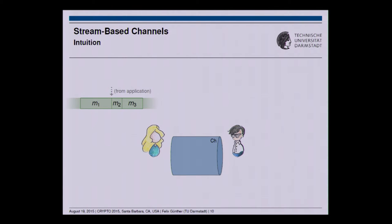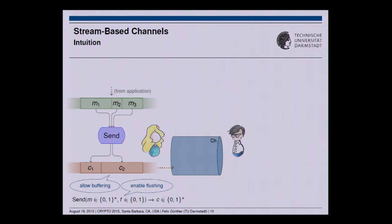The idea is: what the sender receives and is supposed to process is a stream, and it may get fragments of that stream in an arbitrary way. A sending or encryption algorithm takes these fragments and converts them into ciphertext fragments, forming a stream. Importantly, this allows for buffering — not every call to the sending algorithm need produce a ciphertext fragment; the algorithm may buffer until there is enough input. There is a specific flush flag that allows the application to say 'I'm done with what I want to send — please make sure everything is out on the wire.'